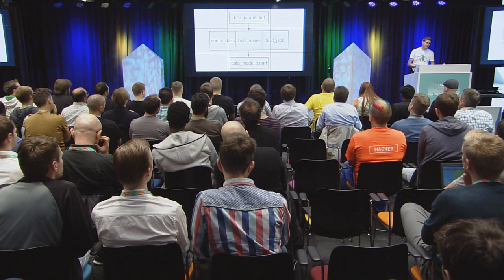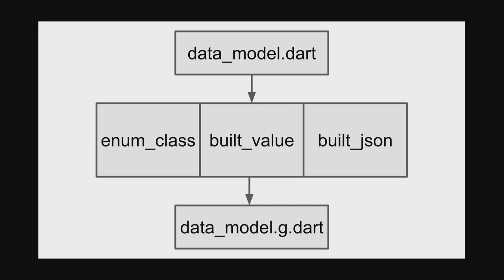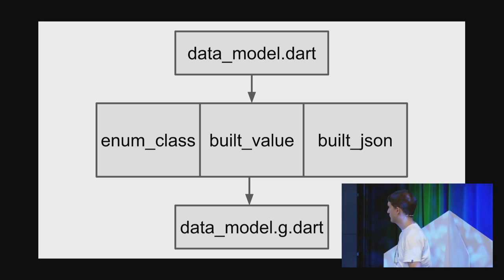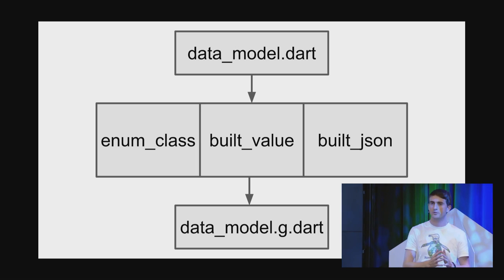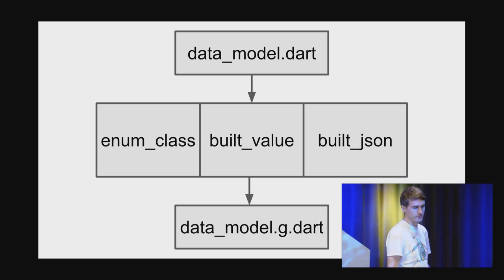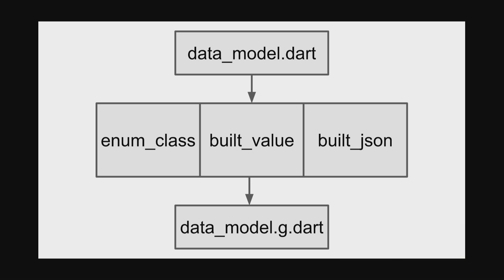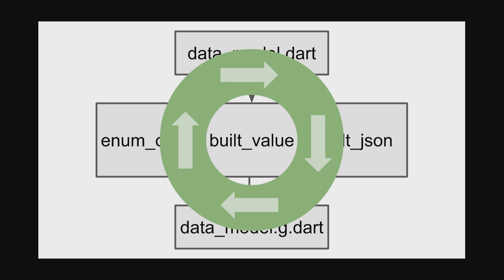I have my datamodel.dart. The key thing in source gen is something called generators. A generator is something that takes source code as input and produces helper source code as output. In this example I have three of them: enum class, which helps you write classes that act like enums; built value, which provides most of the object model properties I asked for; and built JSON, which provides the serialization. These three generators work together to take datamodel.dart as input and provide the boilerplate code as datamodel.g.dart. One thing critical to know is that this source gen process is running continuously — as I update the input source, the helper source is immediately updated, and it's updated quickly. Absolutely crucial for the developer experience.